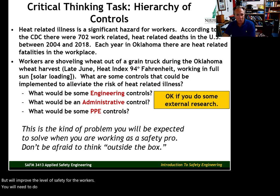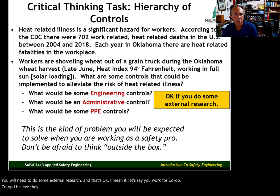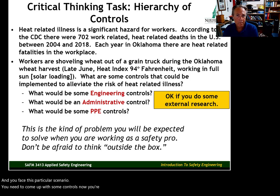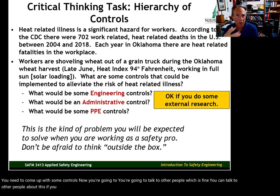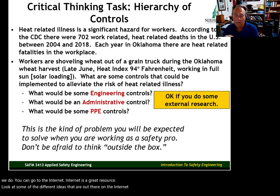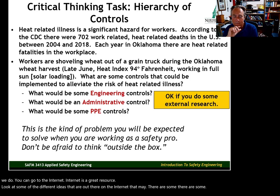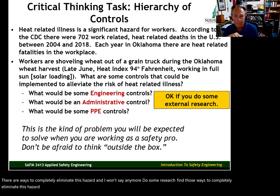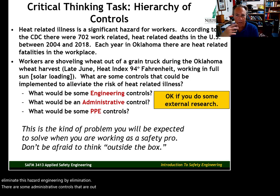This is the kind of problem we face as safety managers — it's not something you necessarily look up in a book. We have to think about what controls we can implement that won't interfere with production but will improve safety for workers. You'll need to do some external research — talk to other safety people, use the internet, look at OSHA and other resources. There are ways to completely eliminate this hazard entirely, which I'll leave for you to discover through research. The full instructions are on Blackboard.